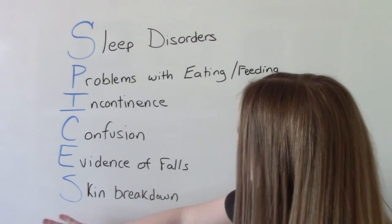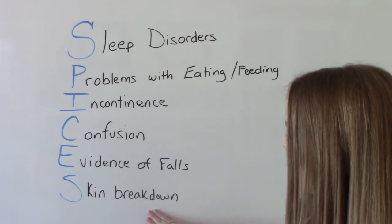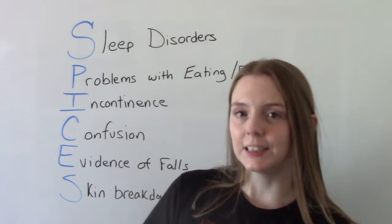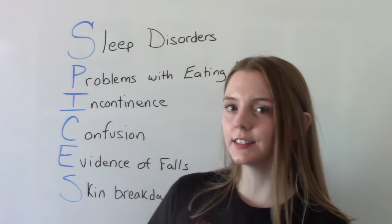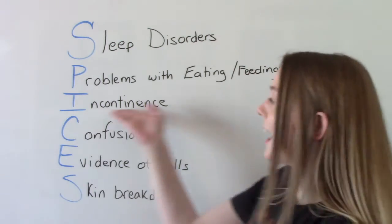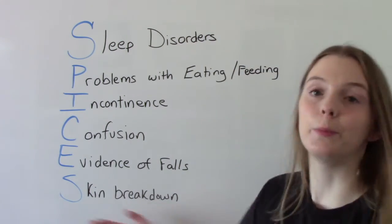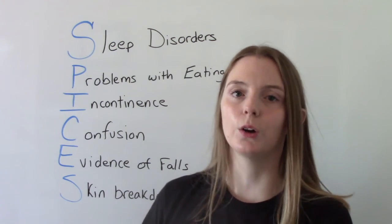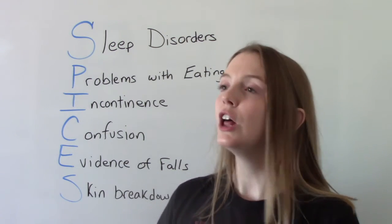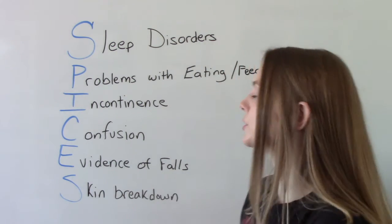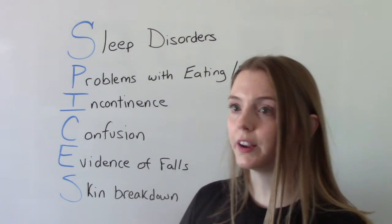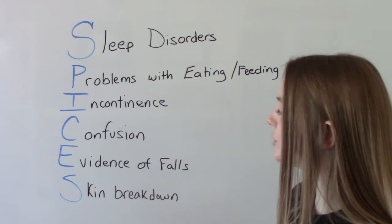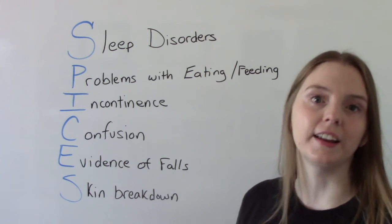The final S is skin breakdown. Again, this is subjective and objective — asking them questions about their continence status and mobility status, but also doing a full thorough head-to-toe skin check, looking for areas where a pressure ulcer might form or is already forming, checking for risk factors, and then doing appropriate nursing interventions to prevent this from happening.